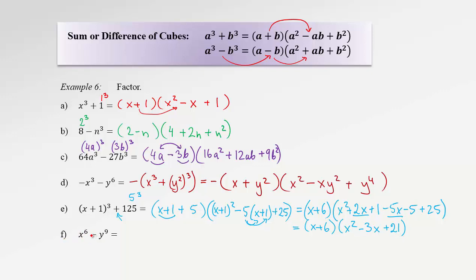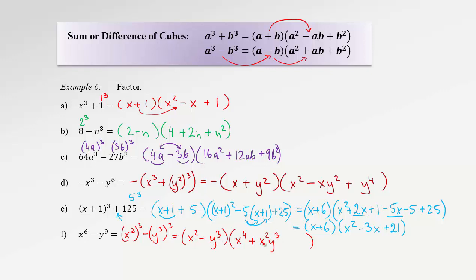In example f, write x to the 6 as (x squared) cubed and y to the 9 as (y cubed) cubed — this is a difference of two cubes. Short bracket: x squared minus y cubed. Long bracket: first term squared is x to the 4, switch the sign to plus, product is x squared y cubed, then add square of the last term which is y to the 6. Final answer: (x squared minus y cubed)(x to the 4 plus x squared y cubed plus y to the 6).